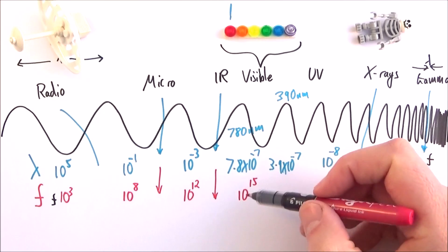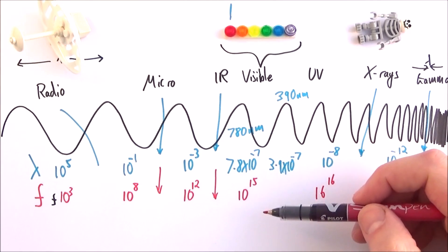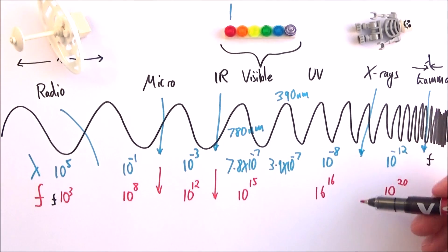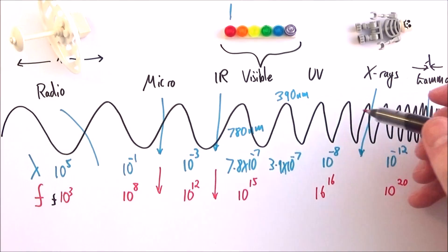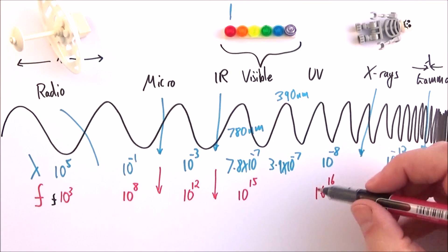Infrared, 10 to the 12 to 10 to the 15. Light basically vibrates about 10 to the 15 times per second. So very, very fast, but not as fast as a really big, highly energetic thing. So ultraviolet, again, 10 to the 15 up to 10 to the 16.